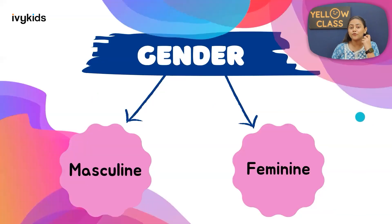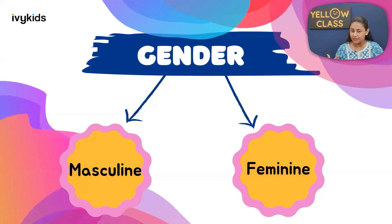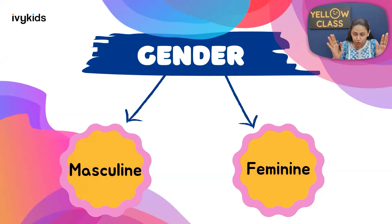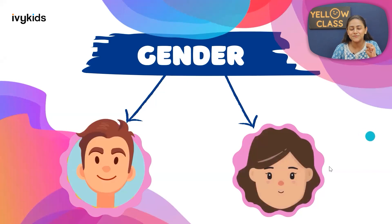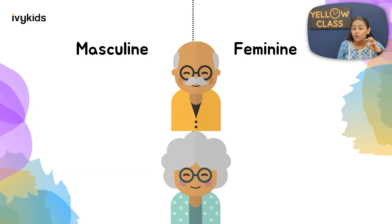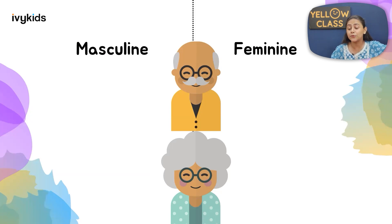There are two genders: masculine and feminine. Remember when I was pasting grandfather's image in masculine and daughter's image in feminine — I was trying to show you examples with the help of that family tree. Masculine is male and feminine is female. Now you can see grandfather and grandmother on the screen — quickly share in the comment where grandfather should go: masculine or feminine?